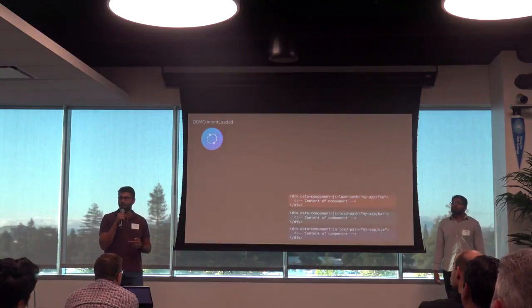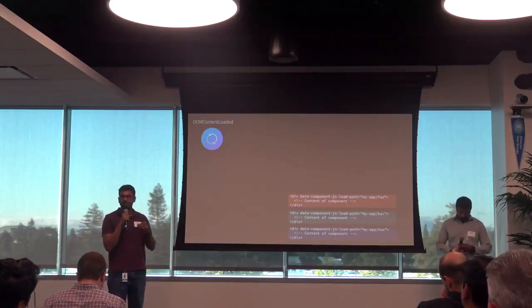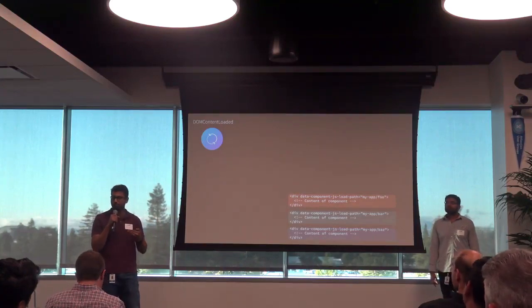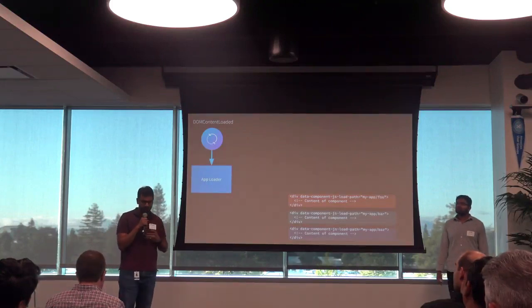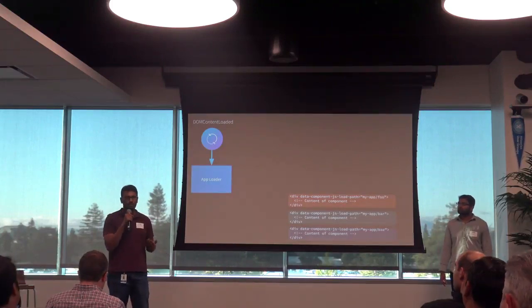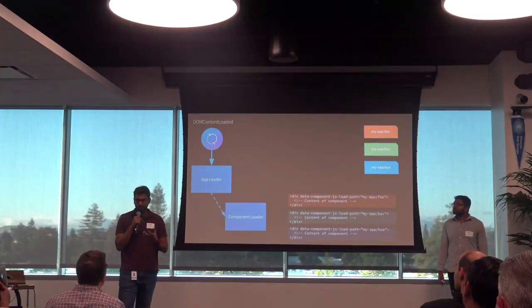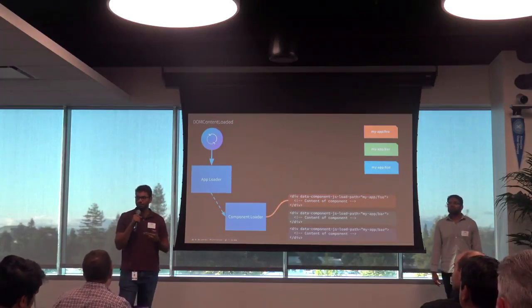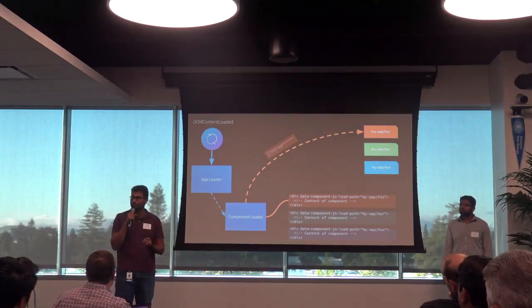How does this help? The DOM now has clearly separated containers with labels telling you what part of the DOM belongs to what component. We introduced something called an app loader. The app loader calls a component loader, which looks for these chunks of DOM already on the page, iterates through them one by one, looks at the component JS load path attribute, and feeds only that part of the DOM to the associated module — similarly for bar and baz.